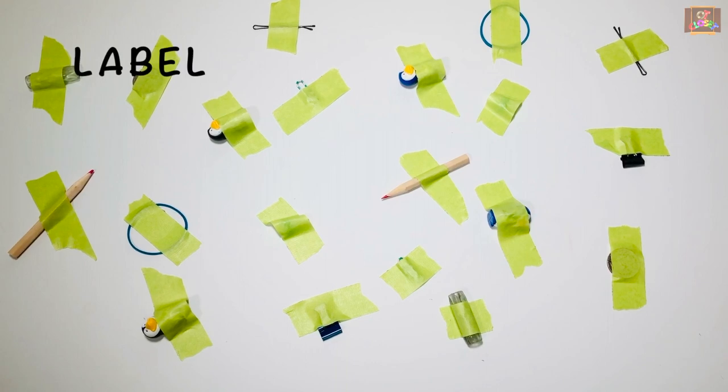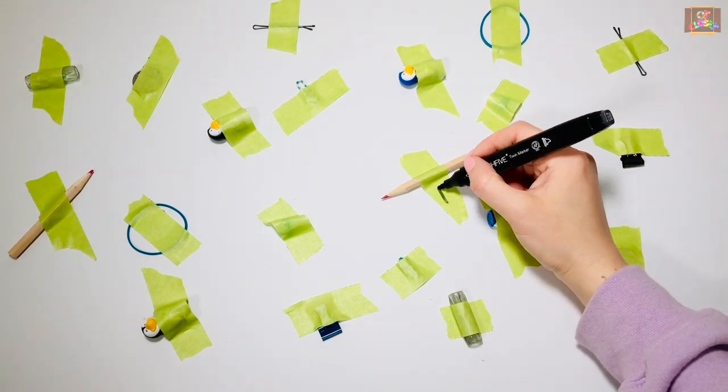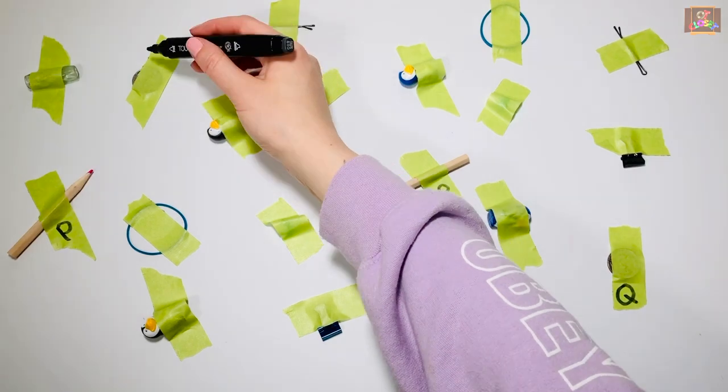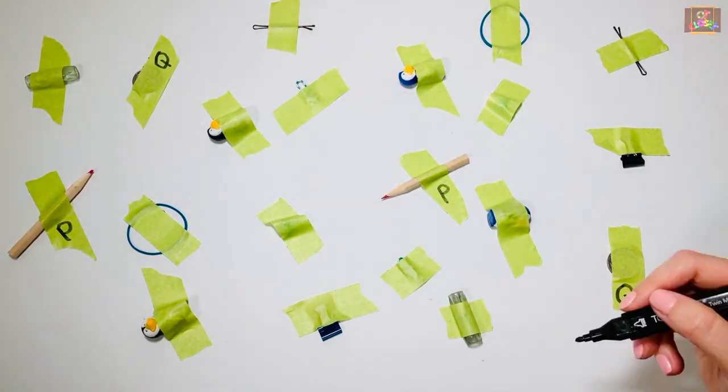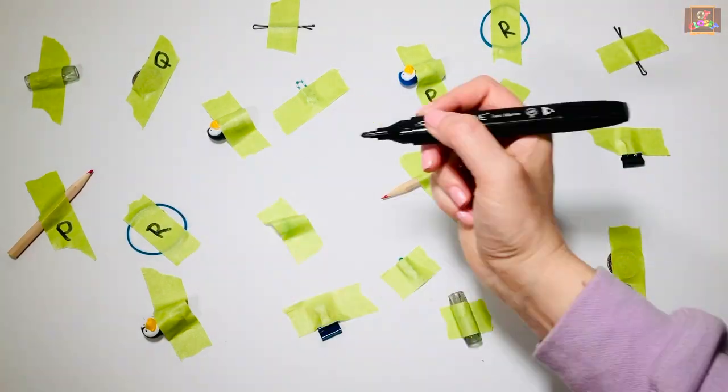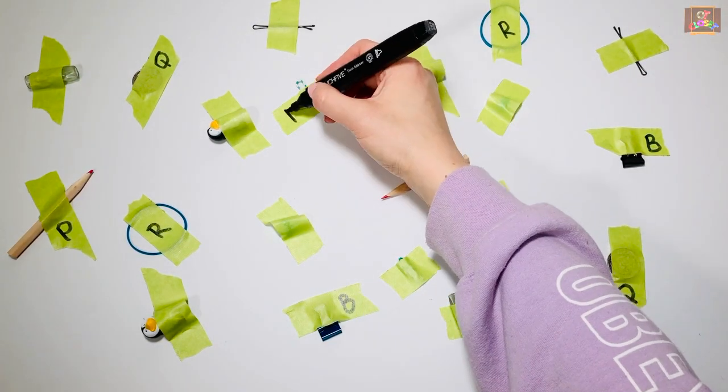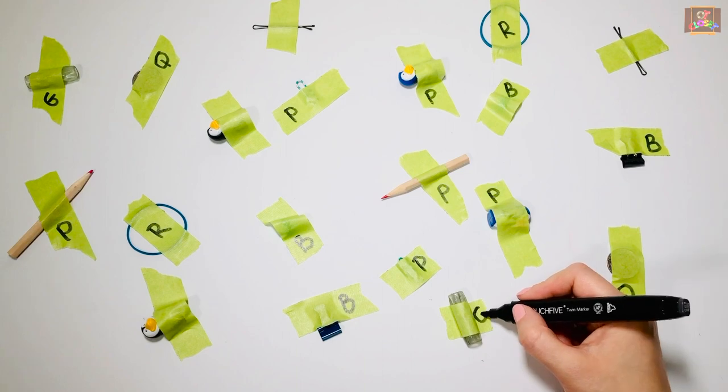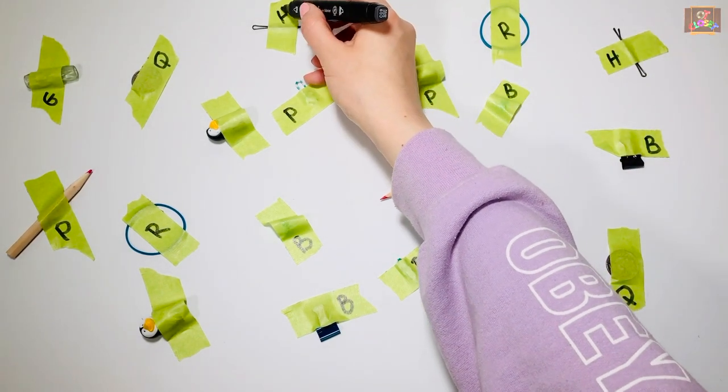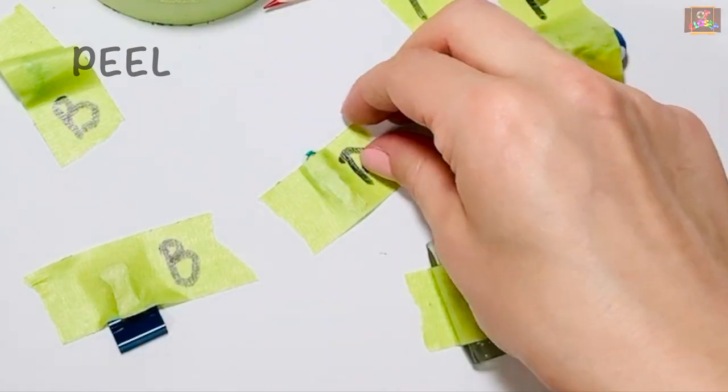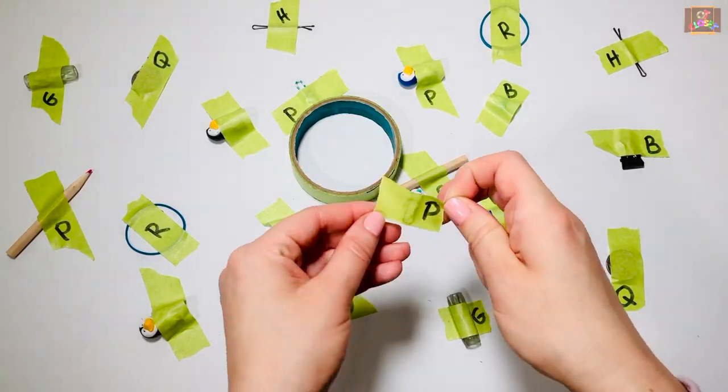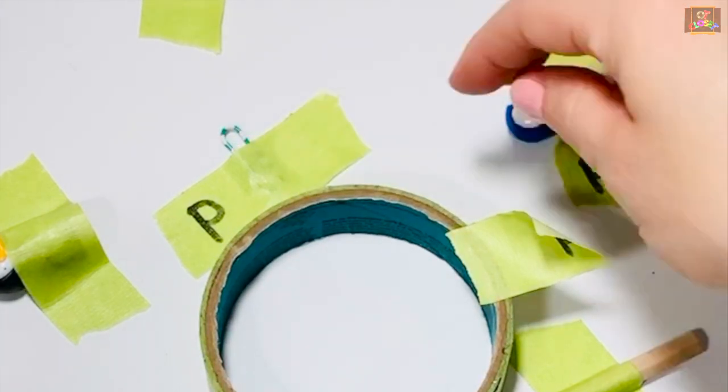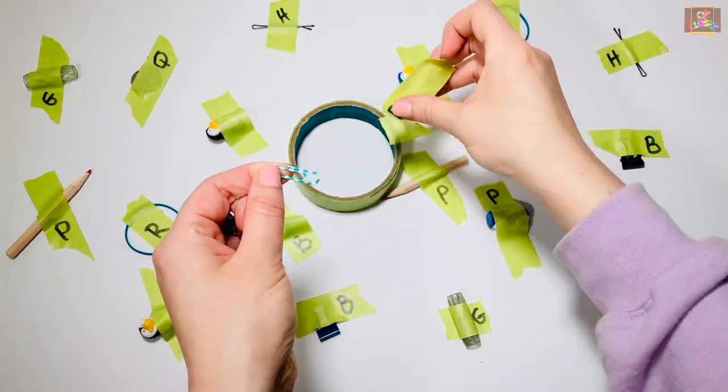Let's label our toys using only the first letter. Let's put our tape in the middle so we can collect all the toys. Use your thumb, index and middle finger to peel off the tape. When you find a match, put your toy inside the tape roll. Continue matching your toys until they're all finished.